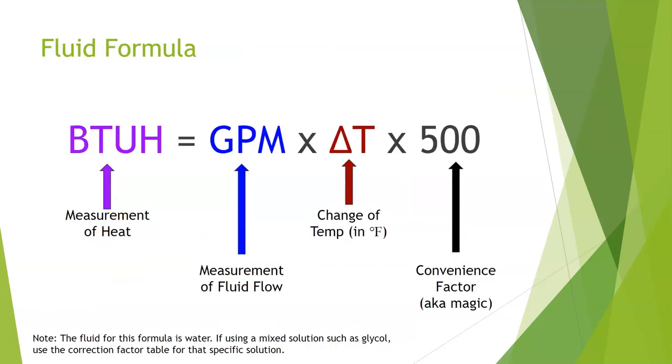Let's take a look at our fluid formula. If you watched my HVAC airflow calculation video, this is going to look shockingly familiar because it is the same formula with different variables. BTUH, a measurement of heat, equals GPM, a measurement of fluid flow, times delta T, change in temperature, times 500, which is our convenience factor or magic number. Air and water have different properties. Heat transfers through air different than water. That's where this 500 number comes in. Trust me, 500 is the magic number.